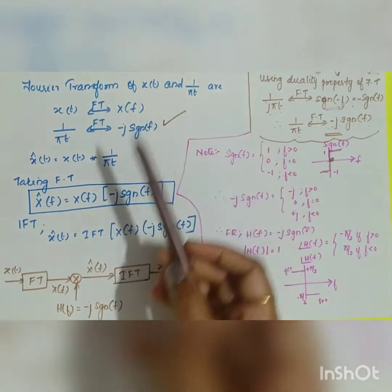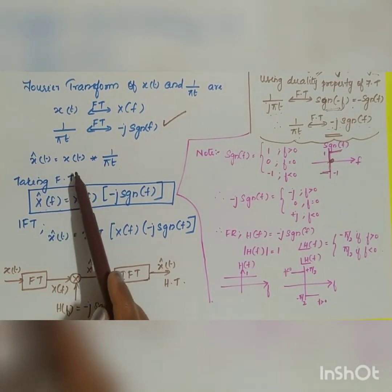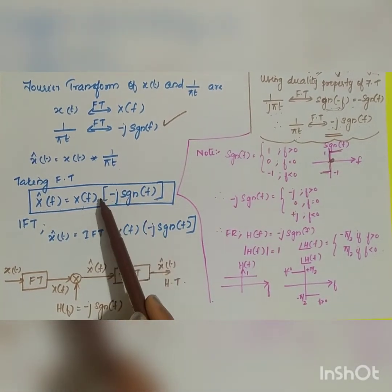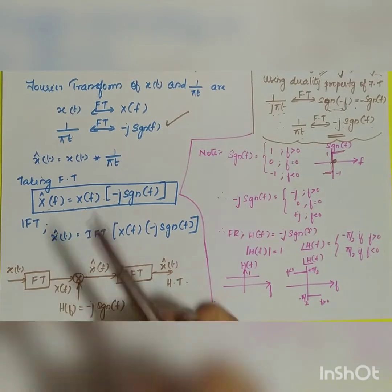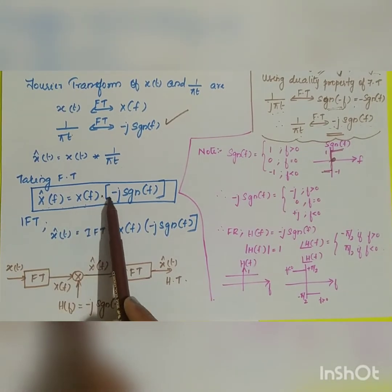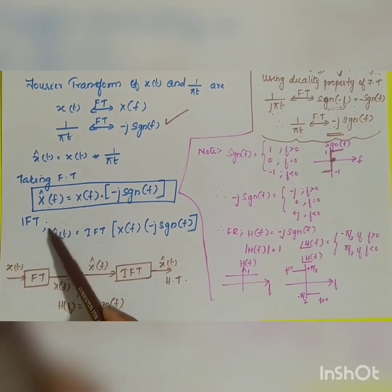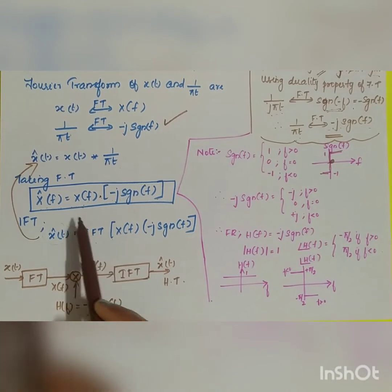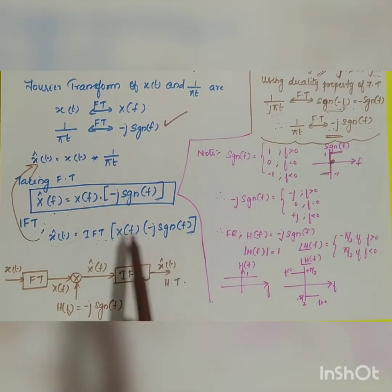In the frequency domain, taking the Fourier transform of both sides: since the Fourier transform of a convolution is multiplication, X̂(f) equals X(f) times −j·sgn(f). To recover x̂(t), we take the inverse Fourier transform of X̂(f), which equals the inverse Fourier transform of X(f) multiplied by −j·sgn(f). This is the frequency-domain representation of the Hilbert transform.